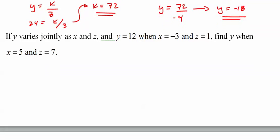And a jointly could mean a direct and an inverse, but unless it specifies, it's just multiplying them out. So, 12 equals K times negative 3 times 1. K equals negative 4.